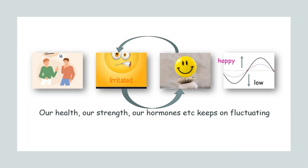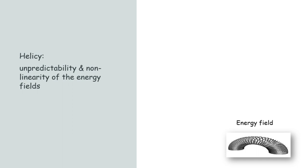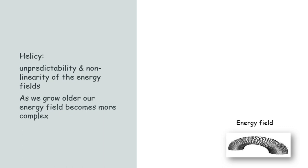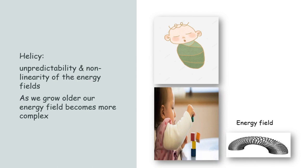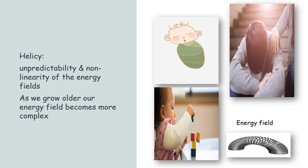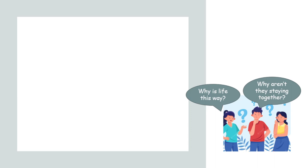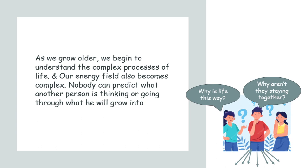Next is helicy, which means the unpredictability and non-linear movement of energy fields. Rogers said that as we grow older, our energy field becomes more complex and diverse — it doesn't move in a straight line. When we were born, we knew nothing beyond eating and sleeping. As we grow older we learn other things; as adolescents we have a sense of consideration for others' feelings but cannot understand complex situations. We often ask why couples aren't staying together, because our energy field is simple and one-way. As we grow older, we begin to understand the complex processes of life, and our energy field also becomes complex.